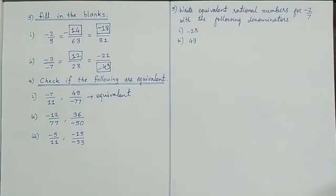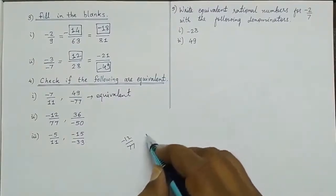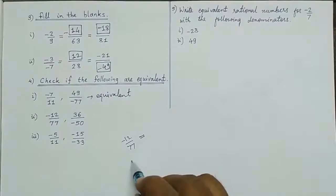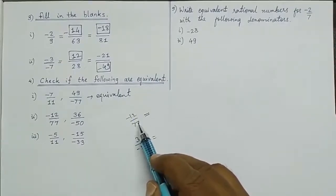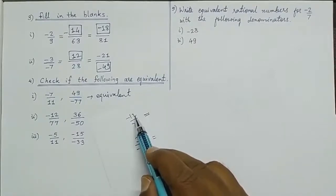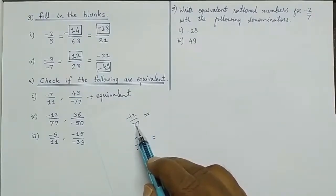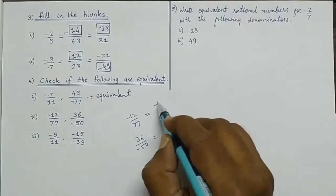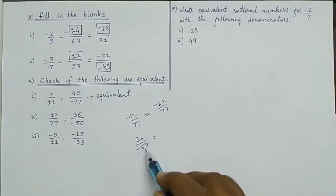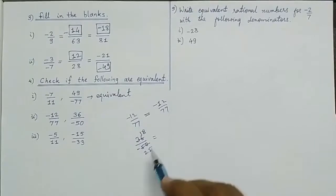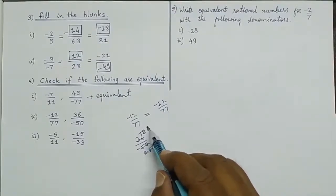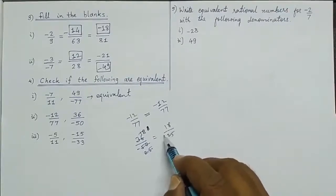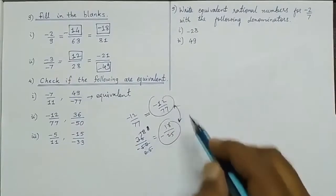Second sum: minus 12 upon 77. We simplify. 12 has divisors 2, 3, 4, 6 and 12. But 77 has only divisors 7, 11 and 77. So 12 upon 77 cannot be simplified further — it remains as it is. After checking with the comparison fraction using the divisor method (cutting with 2's table, giving 18 and 25), these two are not equivalent.